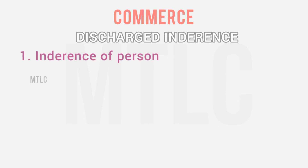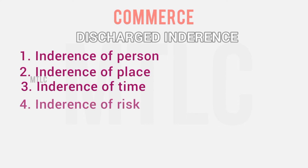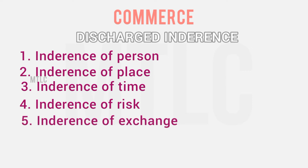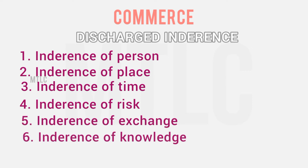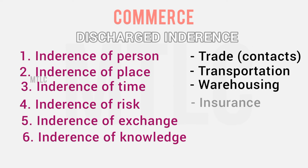So the six hindrances are: hindrance of person, hindrance of place, hindrance of time, hindrance of risk, hindrance of exchange, and hindrance of knowledge. Hindrance of person is removed by trade. Hindrance of place is removed by transportation. Hindrance of time is removed by warehousing. Hindrance of risk is removed by insurance. Hindrance of exchange is removed by banking. Hindrance of knowledge is removed by advertisement and publicity.